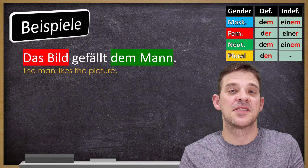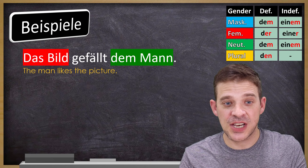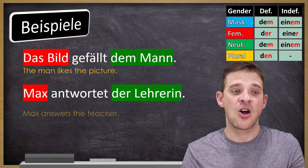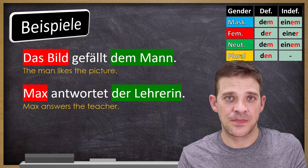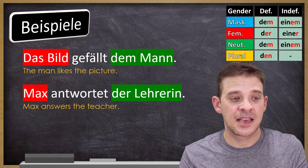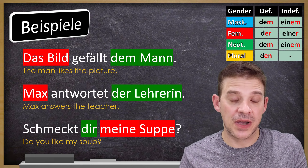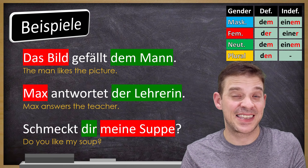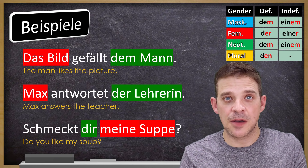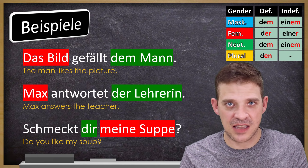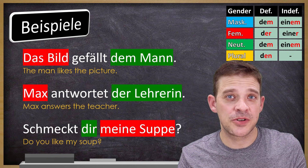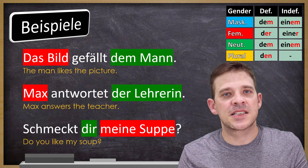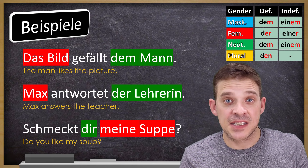Some dative examples: 'Das Bild gefällt dem Mann' — the man likes the picture. 'Dem Mann' is the dative object because 'gefallen' requires dative. 'Max antwortet der Lehrerin' — 'antworten' also requires dative. 'Schmeckt dir meine Suppe?' — does my soup taste good to you? Here 'meine Suppe' is the subject and 'dir' is the dative object. Notice that dative objects are almost always people: 'dem Mann,' 'der Lehrerin,' 'dir.'